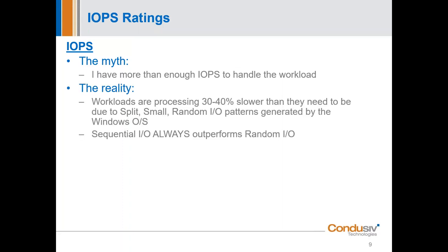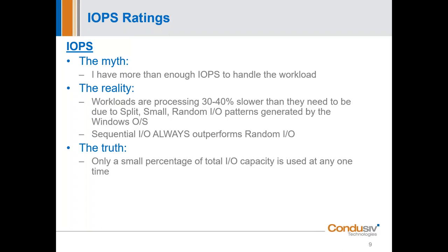When we look at the reality of this, workloads are processing 30–40% slower than they need to be due to the nature of the IO as structured when it gets issued from Windows. Windows is creating a data pattern of small, split, and random IOs — that's generated directly by Windows. Sequential IO always outperforms random IO on any hardware. Only a small percentage of the total IO capacity is being used at any one time.